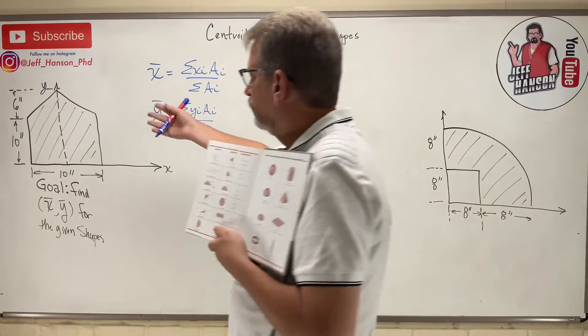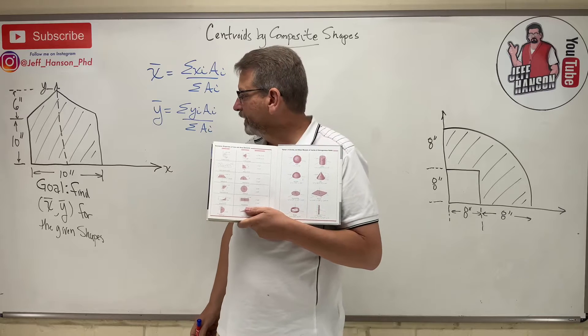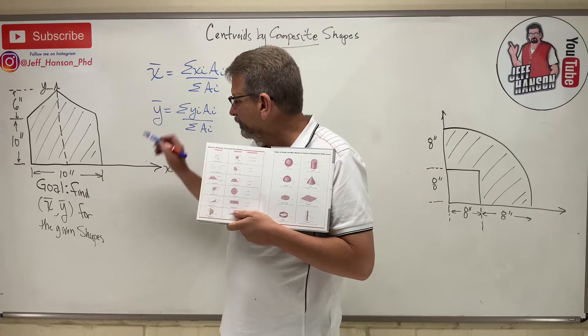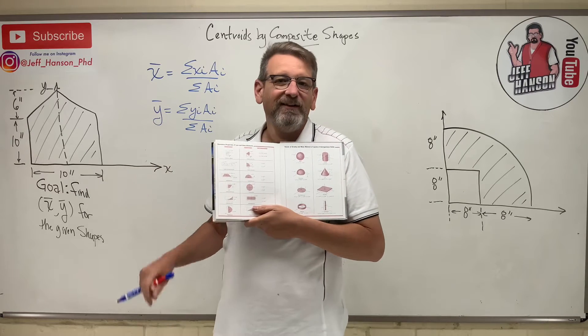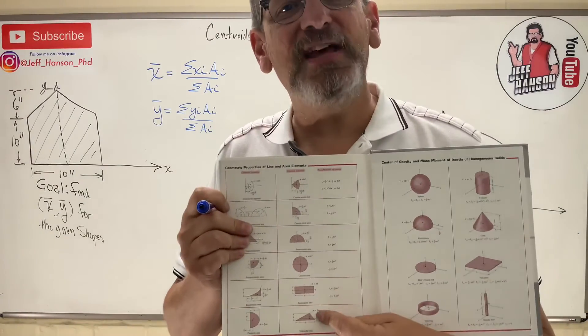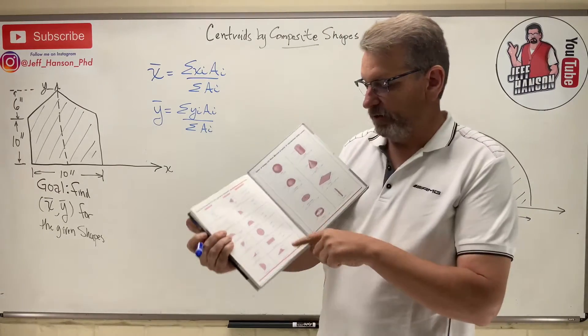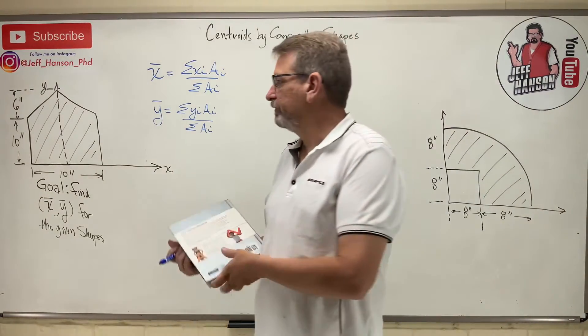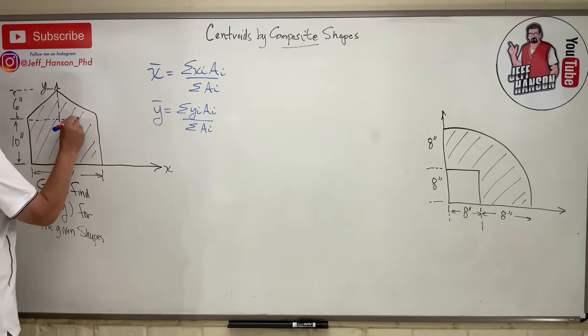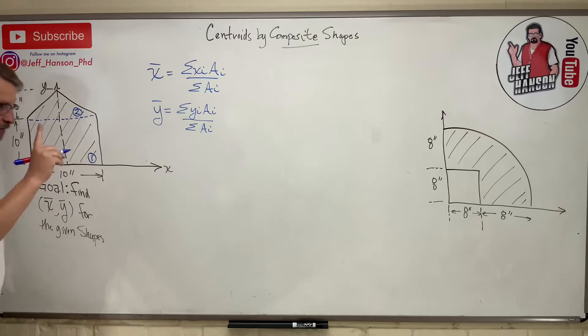Now, problem number one, what is that? Well, a pentagon? My students call that the house shape, right? It has one, two, three, four, five sides. So do we see the house shape on this table somewhere? The answer is no, it's not there. But you know what is there? Rectangles and triangles. So what we can do is subdivide this into two pieces and we'll call this piece number one. We'll call that piece number two.